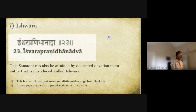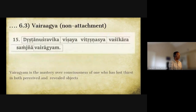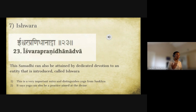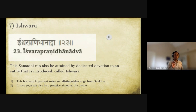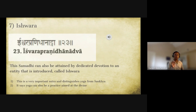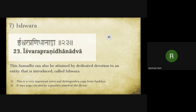Patanjali says the state of nirodha and samadhi can also be attained by dedicated devotion to an entity called Ishvara. Ishvara is a very important concept in yoga for Patanjali. By surrender to Ishvara one can attain samadhi and chitta vritti nirodha. Let's chant: 'Ishvara pranidhana natva.'